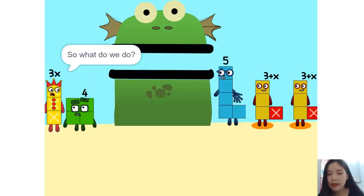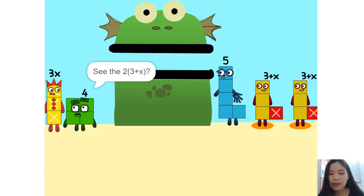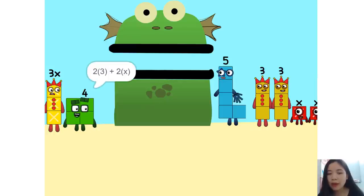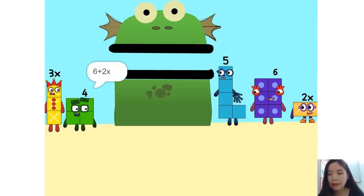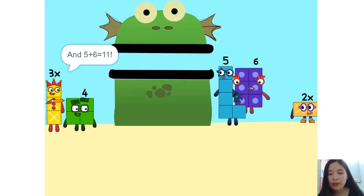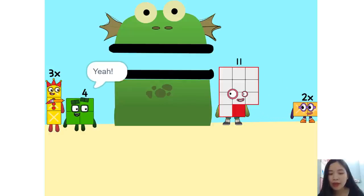You can. So what do we do? Okay. See the 2 times 3 plus x? That's the same as 2 times 3 plus 2 times x, which is 6 plus 2x. And 5 plus 6 is 11. Yeah.